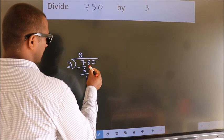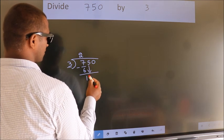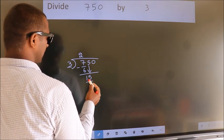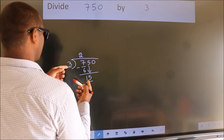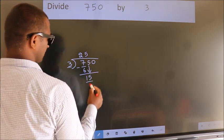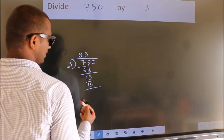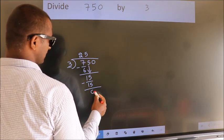After this, bring down the beside number. So, 5 down. So, 15. When do we get 15? In 3 table. 3 times 5 is 15. Now, we subtract. We get 0.